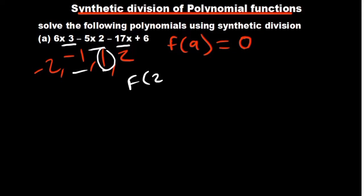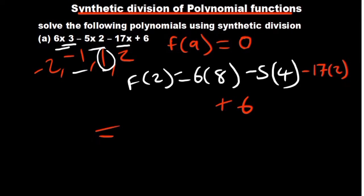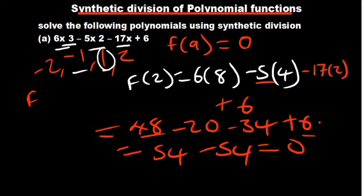How about the function of 2? If you put in a 2, where there is x cubed we get 8. So we have 6 times 8 minus 5 times 4 minus 17 times 2 plus 6. That is 48 minus 20 minus 34 plus 6. The positives: 48 plus 6 is 54. Then minus 54 for the negatives. This is equal to 0. So x equals 2 is one of our factors.